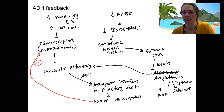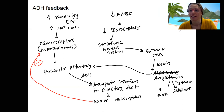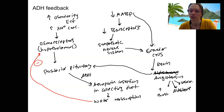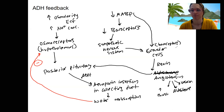Angiotensin is what triggers ADH release from the posterior pituitary. One more connection: decreased blood pressure also targets the granular cells directly — they have baroreceptors that detect low blood pressure and cause the release of renin.